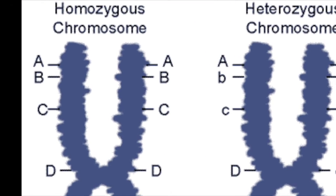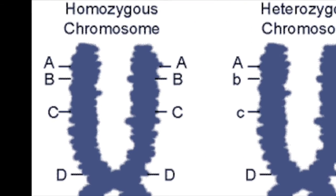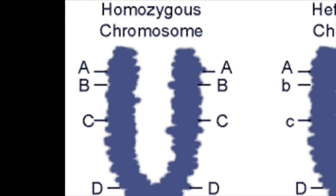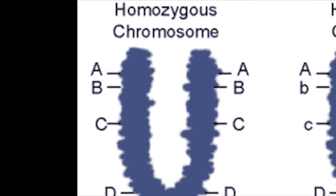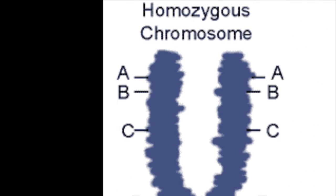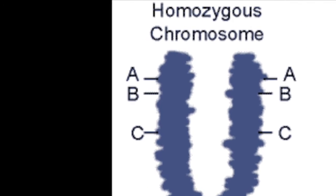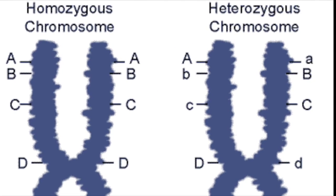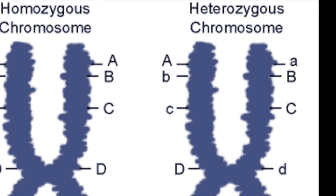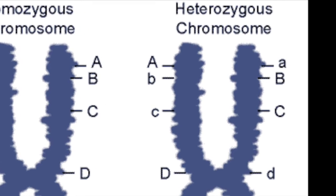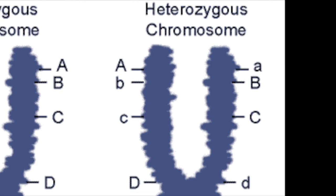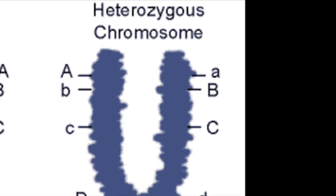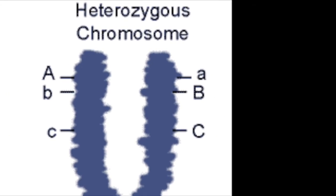When an organism has two of the same alleles for a specific gene, it is homozygous — homo means the same. An organism can be either homozygous dominant or homozygous recessive. If an organism has two different alleles, like an uppercase and a lowercase, for a certain gene, it is known as heterozygous, because hetero means different.